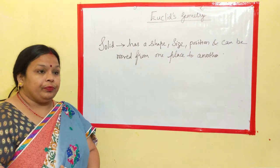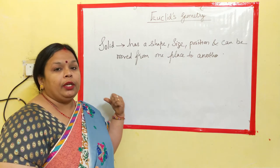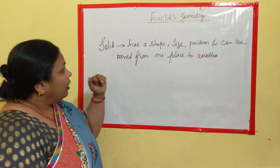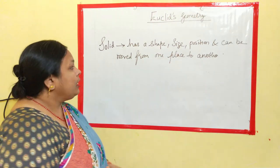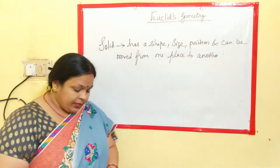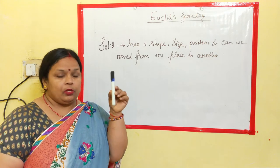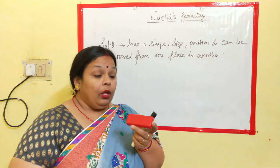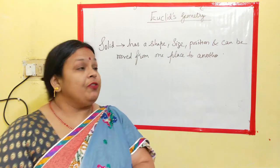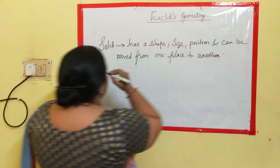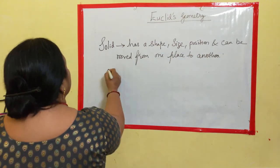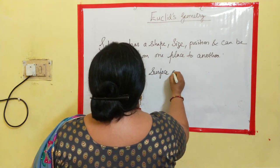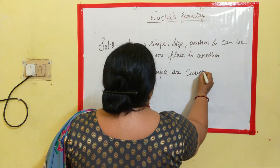What is a solid? It is very difficult to practically explain what is solid. We can show by some examples. It has a shape, size, position and can be moved from one place to another. For example, this marker is a solid. This small duster is again a solid. Now we will be using this duster for the definitions. What else was being discovered? The boundaries of a surface can be curves or straight lines.